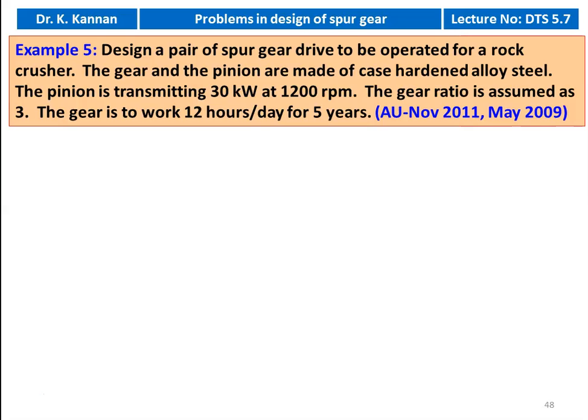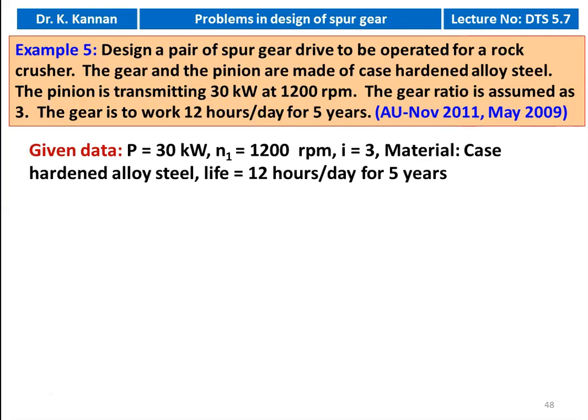This is example number 5 from November 2011 and May 2009 question paper. Design a pair of Spur gear drive to be operated for a rock crusher. The gear and the pinion are made of case hardened alloy steel. The pinion is transmitting 30 kilowatt at 1200 rpm. The gear ratio is assumed to be 3. The gear is to work 12 hours per day for 5 years. We write down the given data: power is 30 kilowatt, pinion speed 1200 rpm, speed ratio 3, material case hardened alloy steel, life 12 hours per day for 5 years.